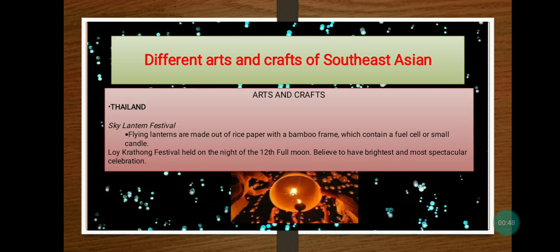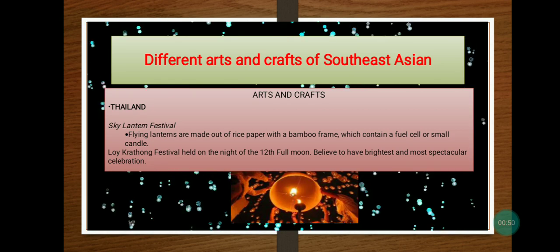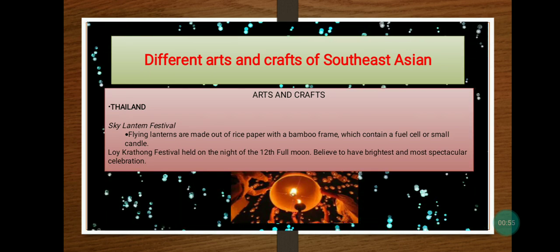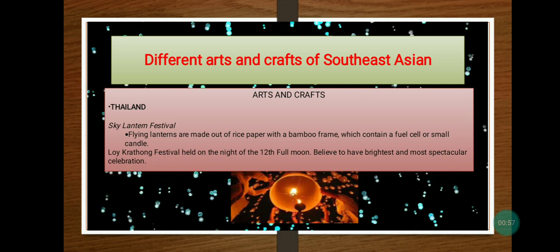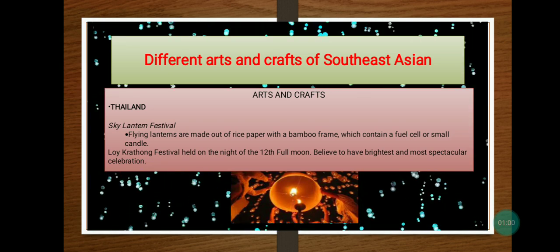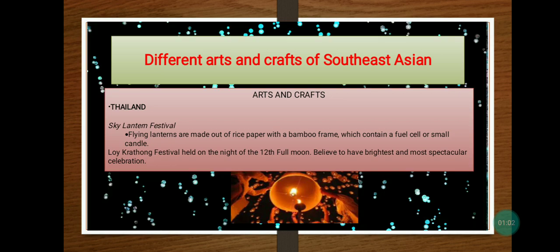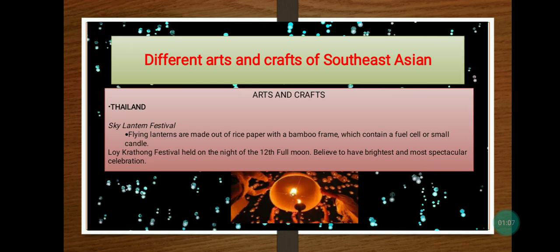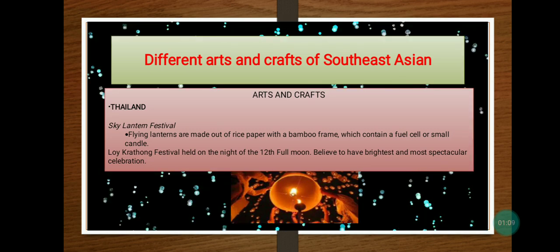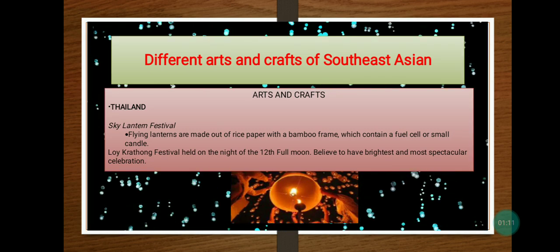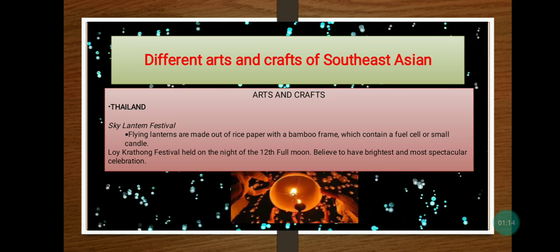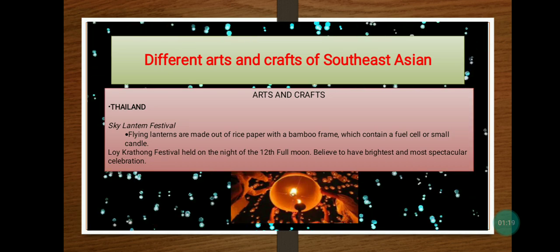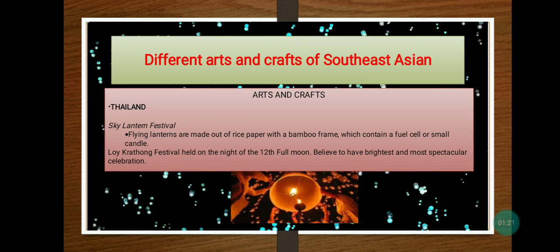Our topic today is all about the different arts and crafts of Southeast Asia. First, let's discuss the arts and crafts of Thailand. Thailand is known for its festivals, including flying lanterns made out of rice paper with a bamboo frame containing a fuel cell or small candle, like the Krathong festival, held on the night of the 12th full moon, believed to be the brightest and most spectacular celebration.